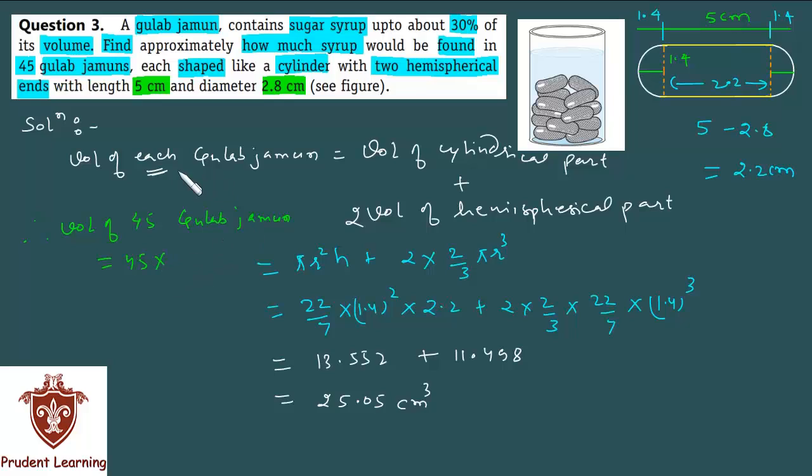Which is 25.05, and the product of both of these gives you 1127.25 cm³.